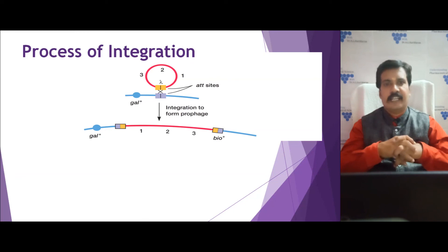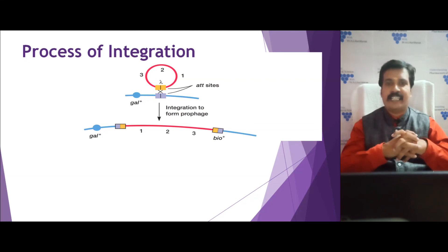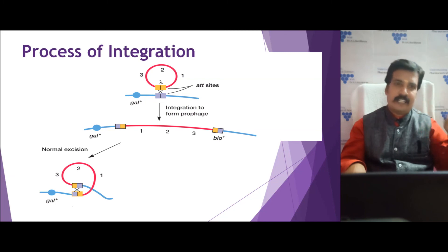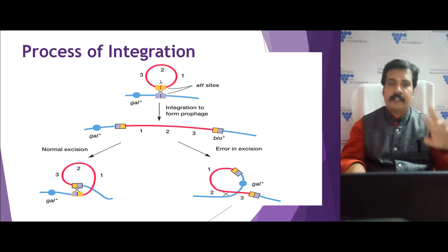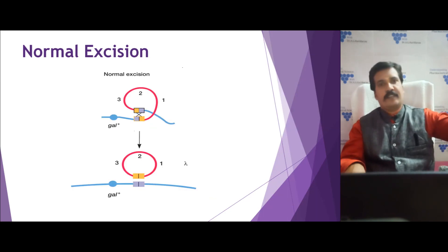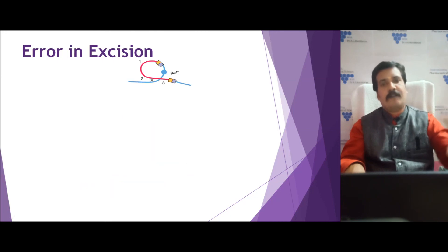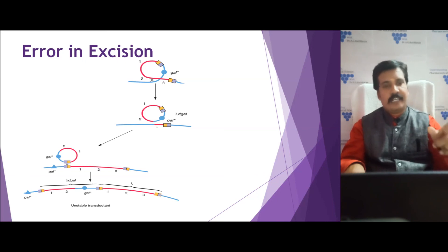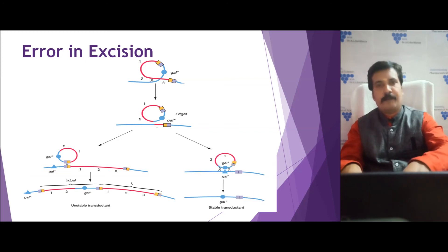In the diagram, we have viral DNA in red color with regions 1, 2, 3, and lambda. In the bacterial chromosome, in the gal-plus region, there is an attachment site. There is a normal viral configuration. During normal excision in specialized transduction, proper excision gives a normal bacteriophage. However, improper excision takes a little bit of chromosomal DNA — the gal-plus region is added to the phage. After crossover, this can result in either a temporary unstable transduction or a stable transduction depending on the integration mechanism.